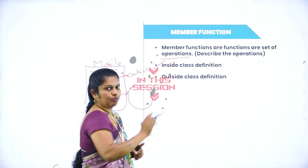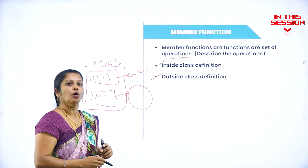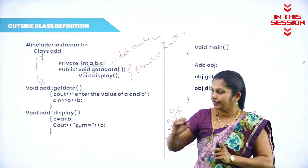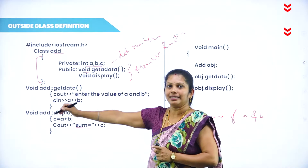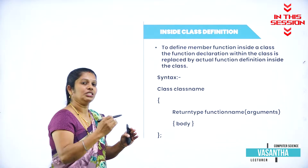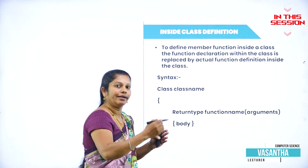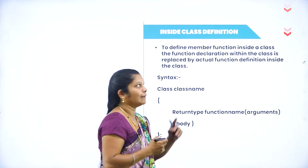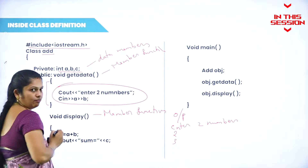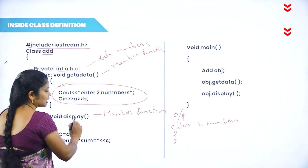This function can be defined in two methods: one is inside class definition and one is outside class definition. In this program, we have three data members and two member functions. The first member function is get data and the second member function is the display function.